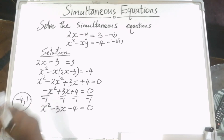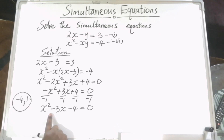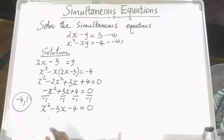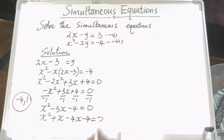We use those two numbers whose sum is minus 3 and product is minus 4. We substitute minus 3x with the two numbers in the equation, giving x squared plus x minus 4x minus 4 equals 0. Notice that x minus 4x is minus 3x.